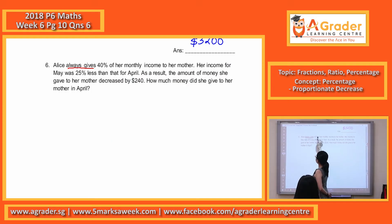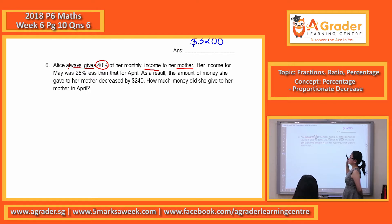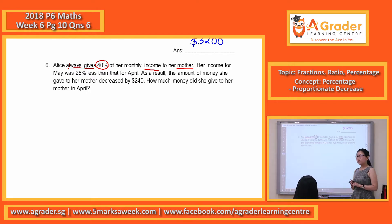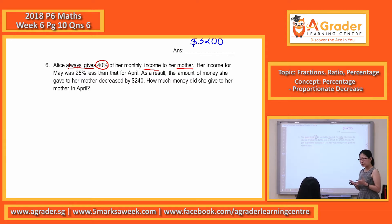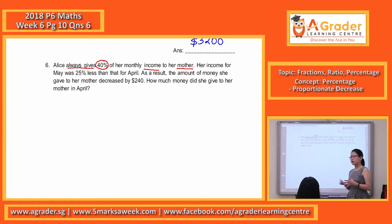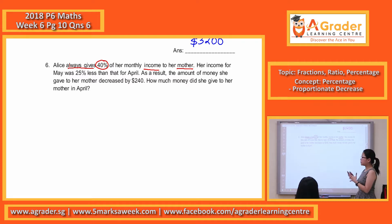Alice always gives 40% of his monthly income to the mother. Please remember, if he earned 100%, 40% of the 100% is still 40%. But if the income drops or increases, the change will actually be proportionate. The decrease will also be proportionate. So we look at the next line.